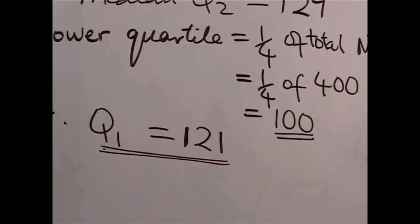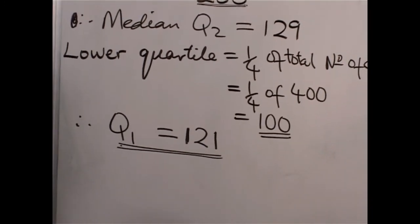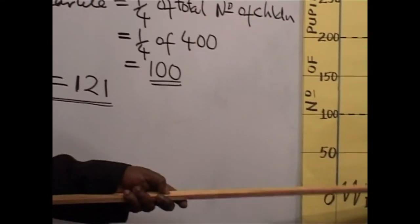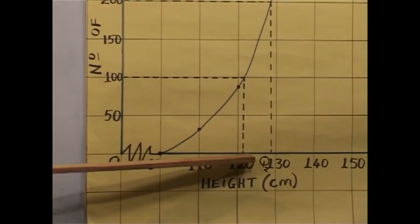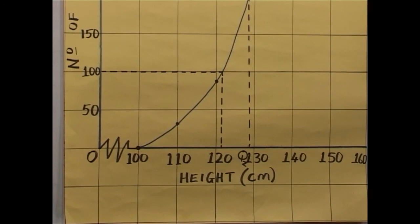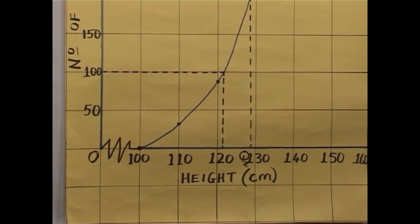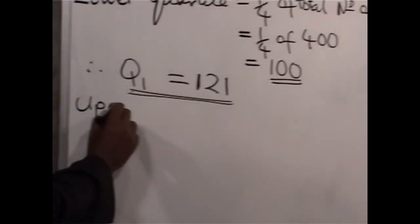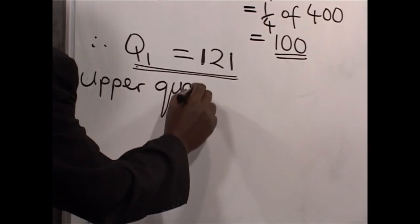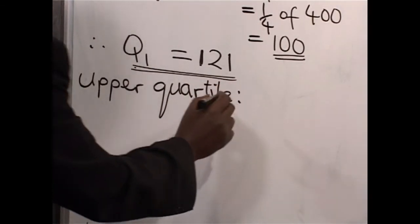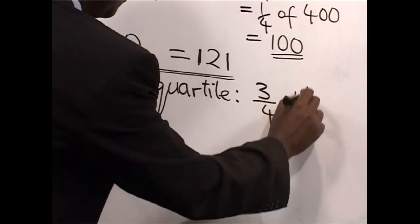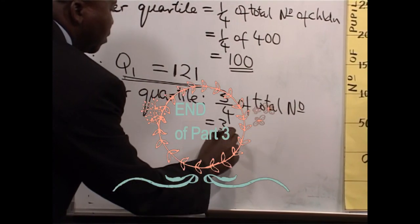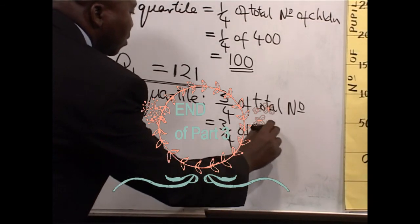Okay? Now, here I am estimating. But on your graph — the ones you use in your exams — the intervals from 120 to the next are subdivided by small squares. So you will be able to count, and that number should be exact — 121, if you did it on the standard graph paper. How about the upper quartile? The upper quartile will be three quarters of the total number. Now, three quarters of 400. This will give us 300.